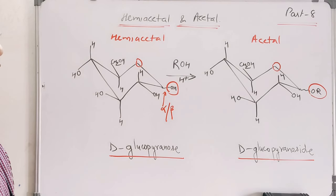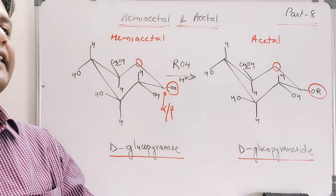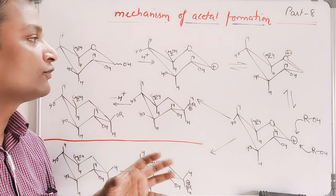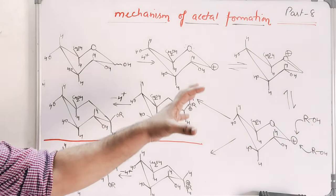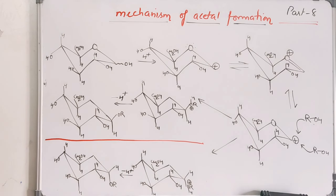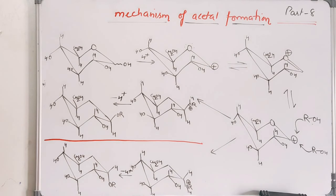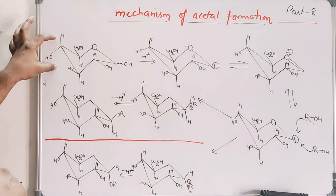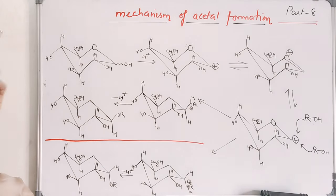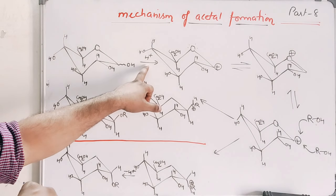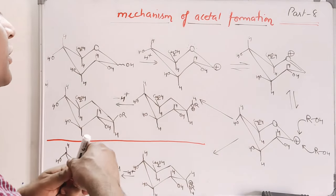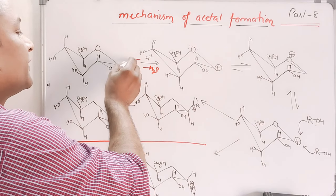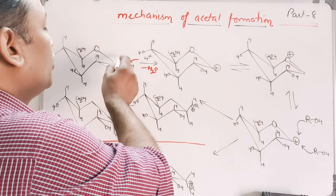Before that, let's see what happens in the presence of acid and alcohol. This is the mechanism of acetal formation. This is D-glucose written in the alpha form — it can also exist in a beta form. In the presence of acid it reacts, and we observe the removal of water. Attack occurs and we observe removal of water.